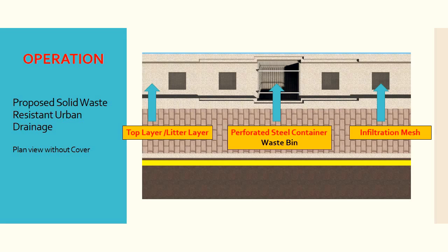Waste accumulated in the litter channel can be manually moved to the waste pit to clear up the drain. Waste pits are fitted with perforated containers that allow easy extraction of accumulated solid waste for collection and disposal through a landfill or other suitable means.